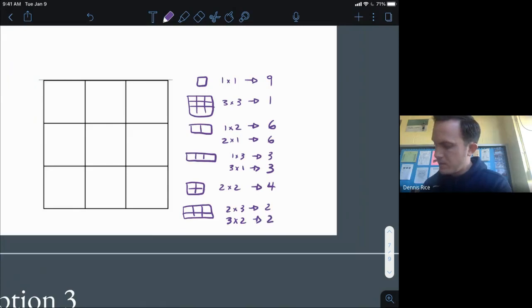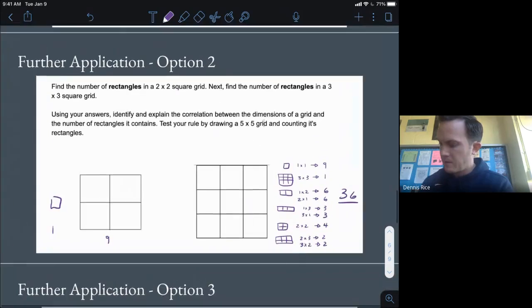Two by three or three by two, there's two of each. And all together that should be four, eight, six is 14 plus 12, 26 plus 10. There are 36 here. Okay so we have in a one by one we had one, in a two by two we had nine, and in a three by three we had 36.